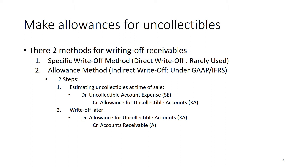The allowance method involves two steps. Step one: you make an estimation at the time of the sale about the amount you expect not to be collected. Step two: you account for the actual write-off, which will occur later.